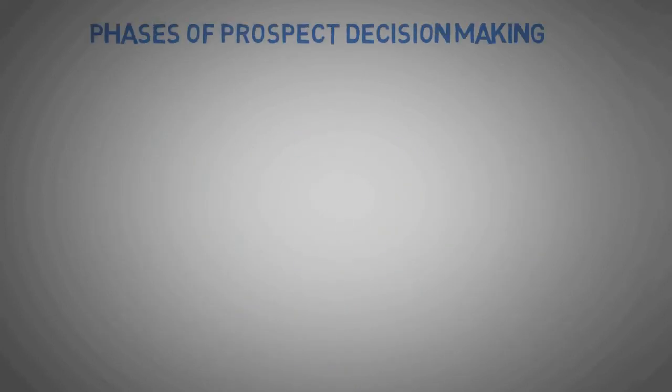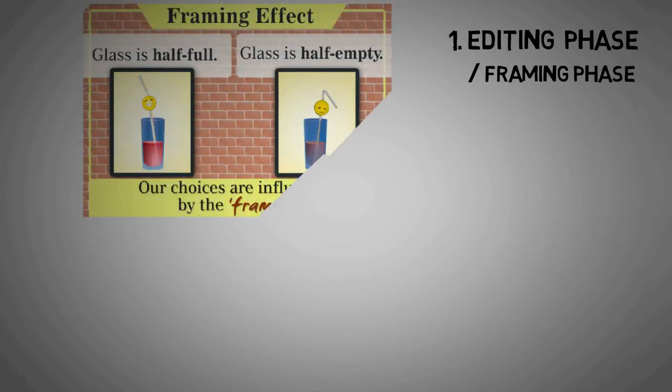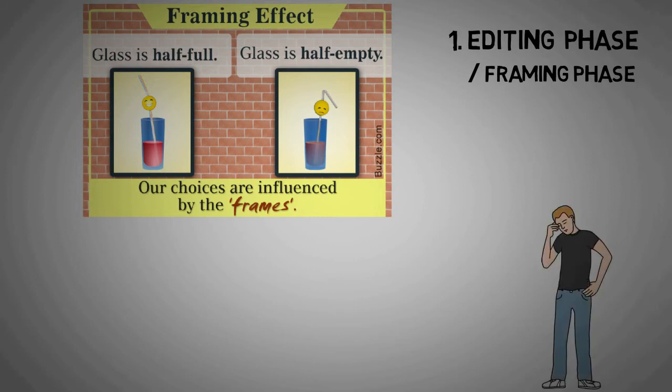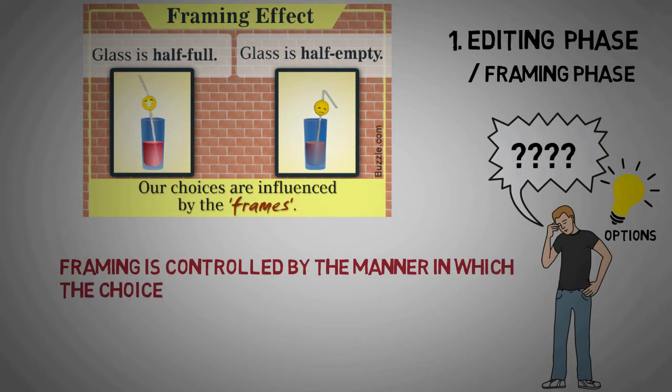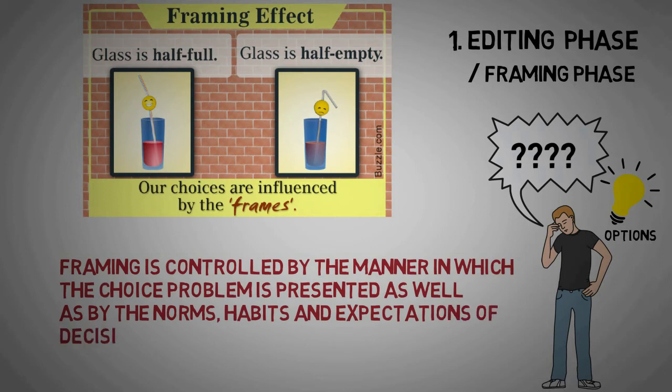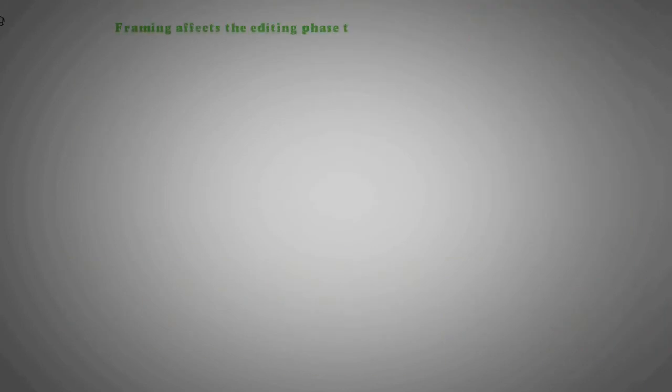There are two phases of prospect decision making: editing phase and evaluation phase. Editing phase or framing phase - framing effect refers to the way in which a choice can be affected by the order or manner in which it is presented to decision maker. In some situations even the options are not known, there the decision maker has to apply his creativity in determining and constructing the options. According to Kahneman and Tversky, framing is controlled by the manner in which choice problem is presented as well as by the norms, habits, and expectation of decision maker.